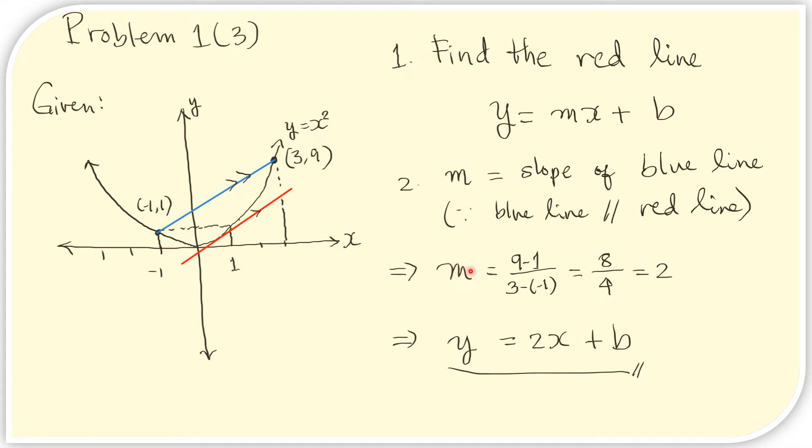That is just the ratio of the difference in the y coordinates of this point and this point. So that is 9 minus 1 to that of the difference in the x coordinates. So that's 3 minus negative 1. And that is just 8 over 4 or 2. Therefore, we now have the value for m here. So our equation for this red line is y equals 2x plus b. And we just need to find b now.